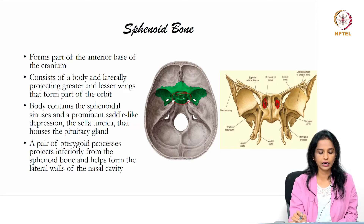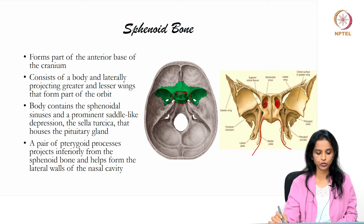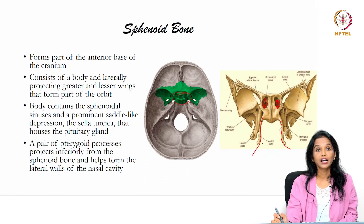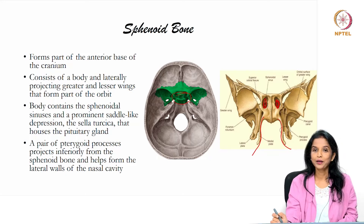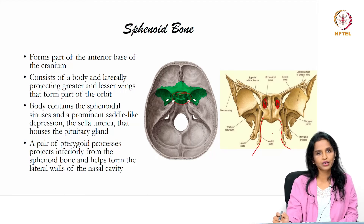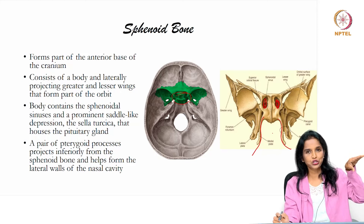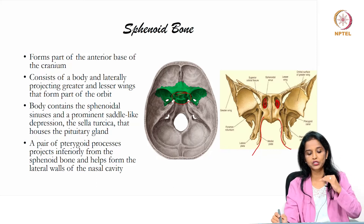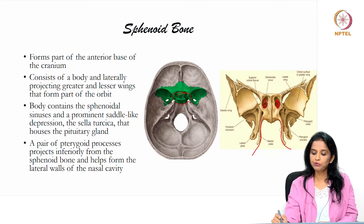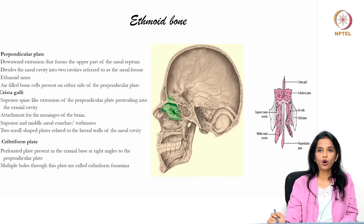The sella turcica region houses the pituitary gland. Additionally, there are two pterygoid processes projecting inferiorly from the sphenoid bone, which help form the lateral wall of the nasal cavity. To recap: the sphenoid bone forms the anterior base of the cranium, has a body with greater and lesser wings, contains sphenoidal sinuses, has a sella turcica housing the pituitary gland, and has pterygoid processes forming the lateral wall of the nasal cavity.